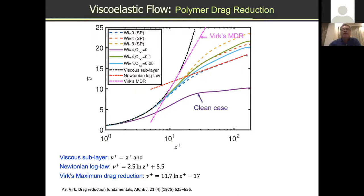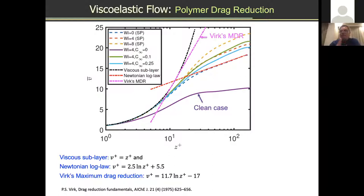Looking at the log-law region to examine polymer drag reduction: the clean case sits between the log-law (red dashed) and the maximum drag reduction line (Virk's asymptote, magenta line). We are in the low drag reduction regime (below 40% reduction). When strong enough surfactant is added to the viscoelastic case, we recover the polymer drag reduction effect in turbulent flows — preliminary results consistent with our intuition, though the simulations are not yet complete.